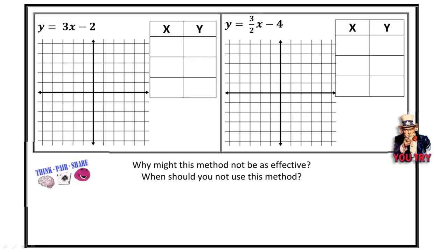Let's try a couple of these together. I'm going to pick three x values: 1, 2, and 3, then substitute them in for x to solve for y. y equals 3 times 1 minus 2; y equals 3 times 2 minus 2; y equals 3 times 3 minus 2. Evaluating: 3 times 1 is 3 minus 2 equals 1; 3 times 2 is 6 minus 2 equals 4; 3 times 3 is 9 minus 2 equals 7. So y equals 1, 4, 7.